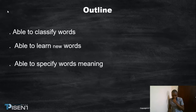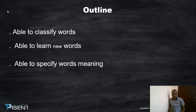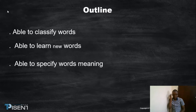Now let's look at the outline. The first outline talks about how you are able to classify words. The second one talks about how you are able to learn new words. The third one talks about how you are able to specify words' meaning.